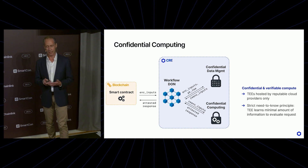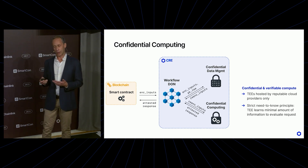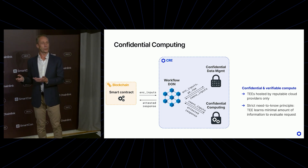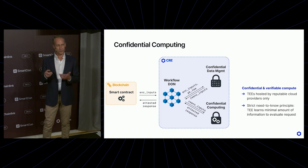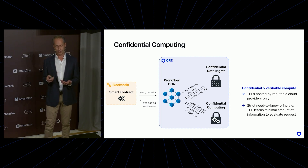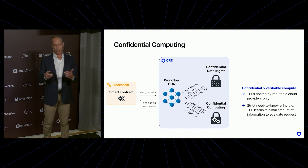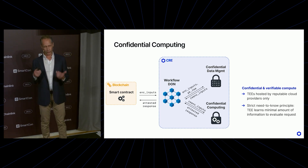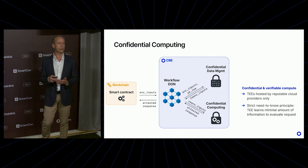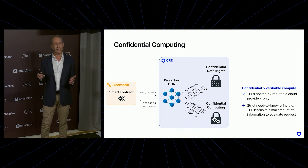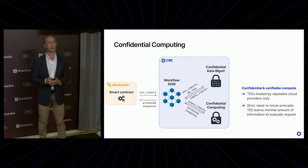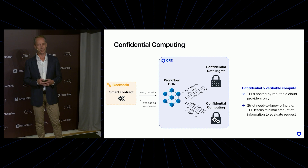So this enclave will receive, inside the enclave, decrypt the private inputs, perform the computation, and create a cryptographic attestation confirming that this execution has been performed in a secure enclave, confirming these are the inputs it was working on, without revealing any of the secrets. So we have public verifiability without revealing any of the confidential information.